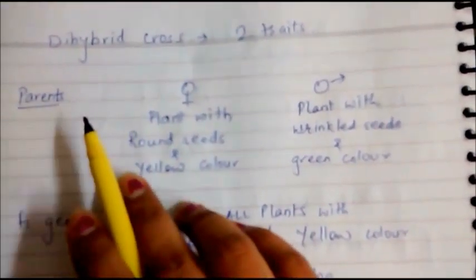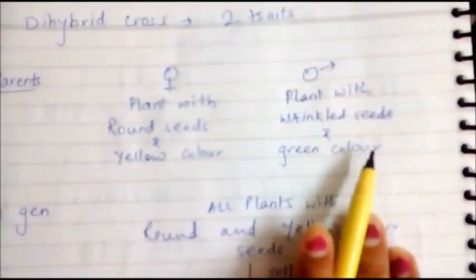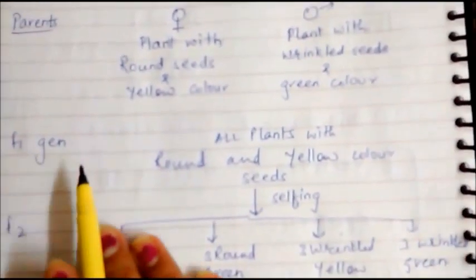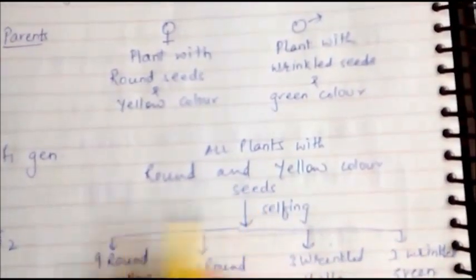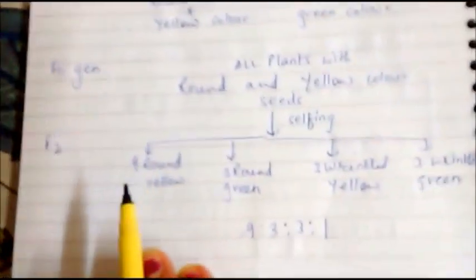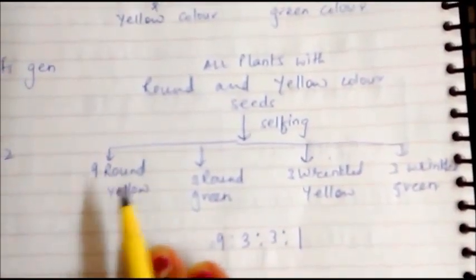For example, if we take parents as a plant with round seeds and yellow color crossed with a plant with wrinkled seeds and green color — round yellow being dominant and wrinkled green being recessive — in the F1 generation, all plants have round and yellow color seeds. In the F2 generation, after selfing, we get nine round yellow, three round green, three wrinkled yellow, and one wrinkled green.